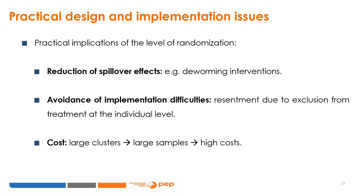Designs where treatment is randomised at a level higher than the individual are called cluster-based randomized control trials. The level of randomisation has strong practical implications. Randomisation at higher levels is recommended where spillover effects or externalities can be expected. For example, in a deworming intervention randomised at the individual level, the comparison group will also indirectly benefit, reducing the difference between treatment and control outcomes. Randomising at the village level and targeting villages far apart will help reduce bias due to spillovers.